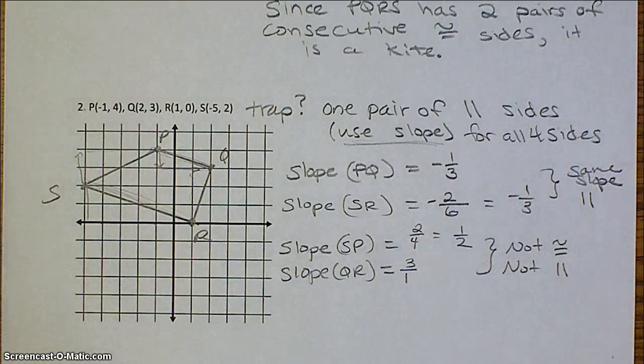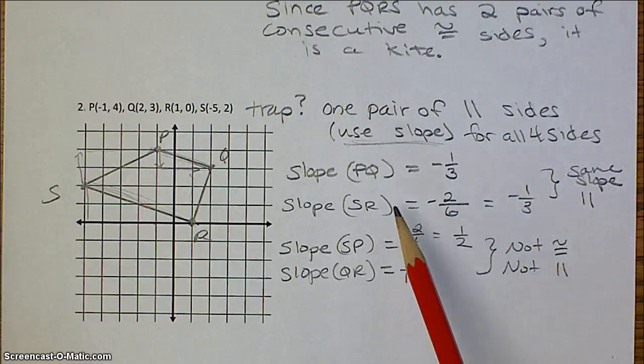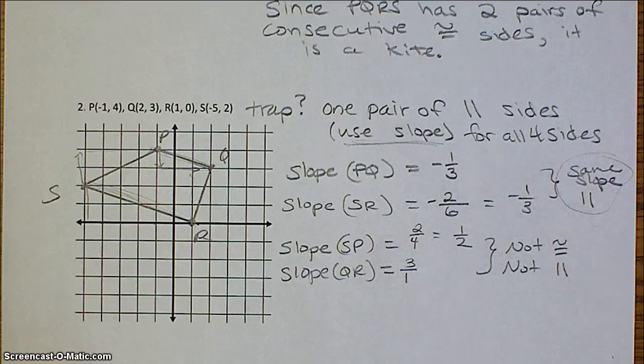So our original conclusion is true. This is a trapezoid, because only one pair of opposite sides are parallel.